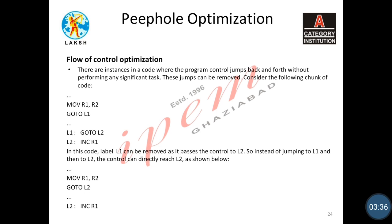The next technique is flow of control optimization. There are instances in code where the program control jumps back and forth without performing any significant task — these jumps can be removed. For example, if we use a goto on L1 and at L1 we again use a goto for L2, we can directly use L2. The L1 goto operation is of no use here, so L1 can be removed as it only passes control to L2.